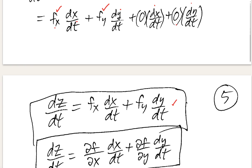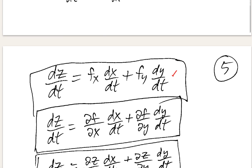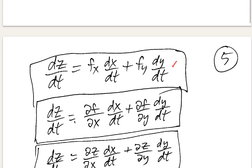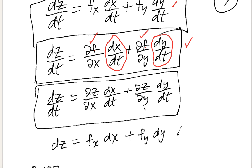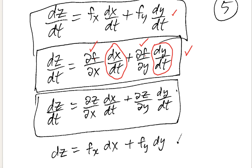This is a form of the chain rule. If you want to write it with the partial derivative symbols, there's another way of writing it. Notice that I'm using regular d's for dx over dt and dy over dt because y and x are actual functions of a single variable t. I need partial derivatives on z with respect to x and y because z is a function of both x and y. Here are three different ways people might write this chain rule.